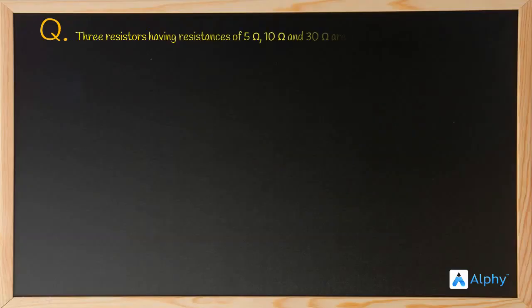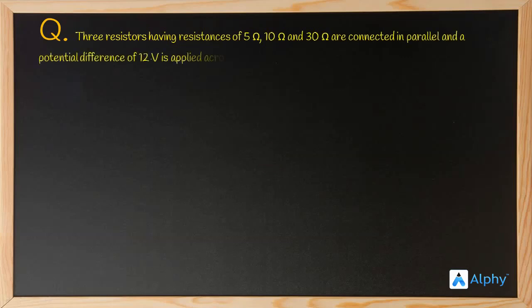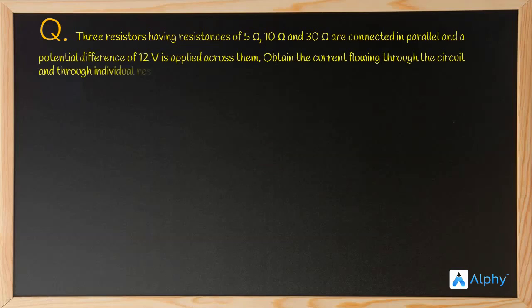Three resistors having resistance 5 ohm, 10 ohm, and 30 ohm are connected in parallel, and a potential difference of 12 volts is applied across them. We need to find the current flowing through the circuit and through individual resistors, and also the effective resistance in the circuit.